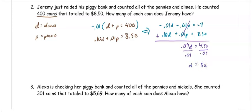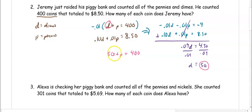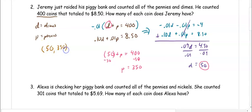Once we know we have 50 dimes, we substitute in: 50 plus P equals 400. When we subtract the 50, we get P equals 350. Our ordered pair is 50 comma 350. Jeremy has 50 dimes and 350 pennies.